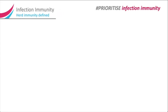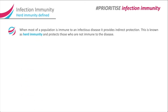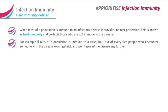Herd immunity defined. When most of a population is immune to an infectious disease, it provides indirect protection — this is known as herd immunity — and protects those who are not immune to the disease. For example, if 80% of a population is immune to a virus, four out of every five people who encounter someone with the disease won't get sick and won't spread the disease any further.